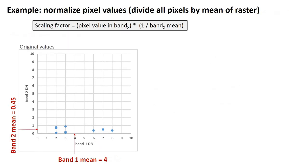So, how can we rescale data? There's lots of different ways that you can rescale the data. One way to do it is to essentially normalize the pixel values, which simply means to divide all the pixels by the mean value of all the pixels in the raster. So, let's look at this visually again.